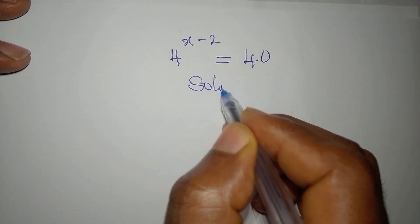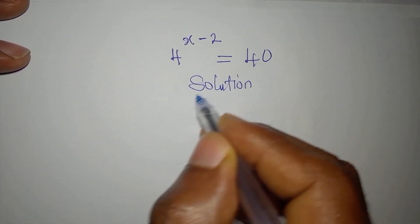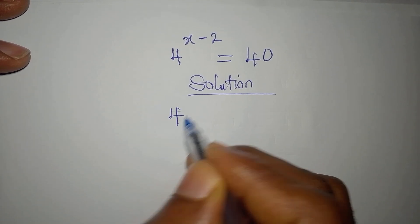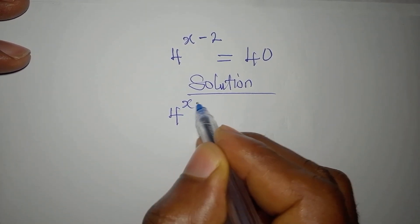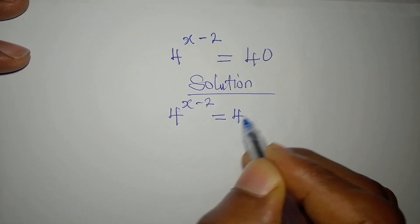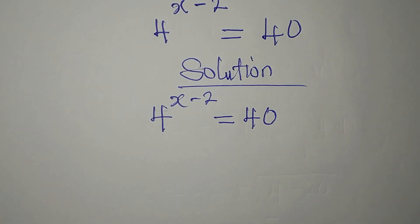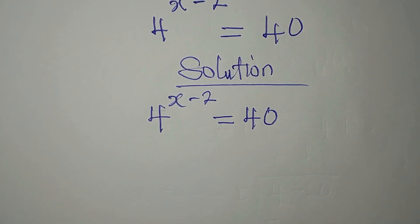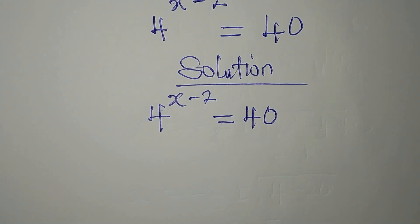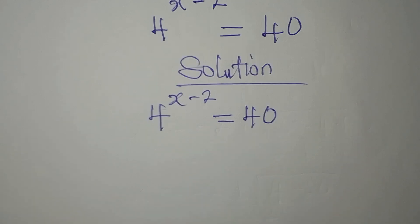Let's work on this again. We have 4 to the power of x minus 2 equals 40. If you're new to my channel, subscribe so you can get more of my videos.